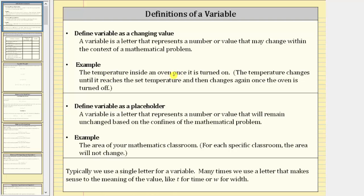Now let's look at the definition of a variable as a placeholder. A variable is a letter that represents a number or value that will remain unchanged or constant based on the confines of the mathematical problem. As an example, consider the area of your mathematics classroom. For each specific classroom, the area will not change.